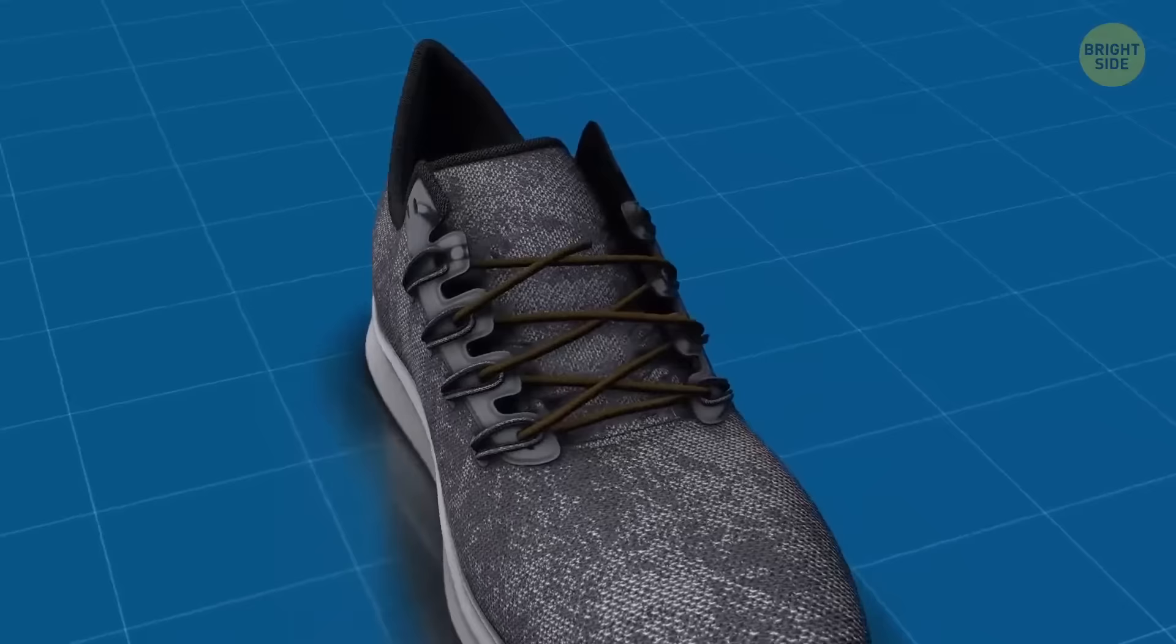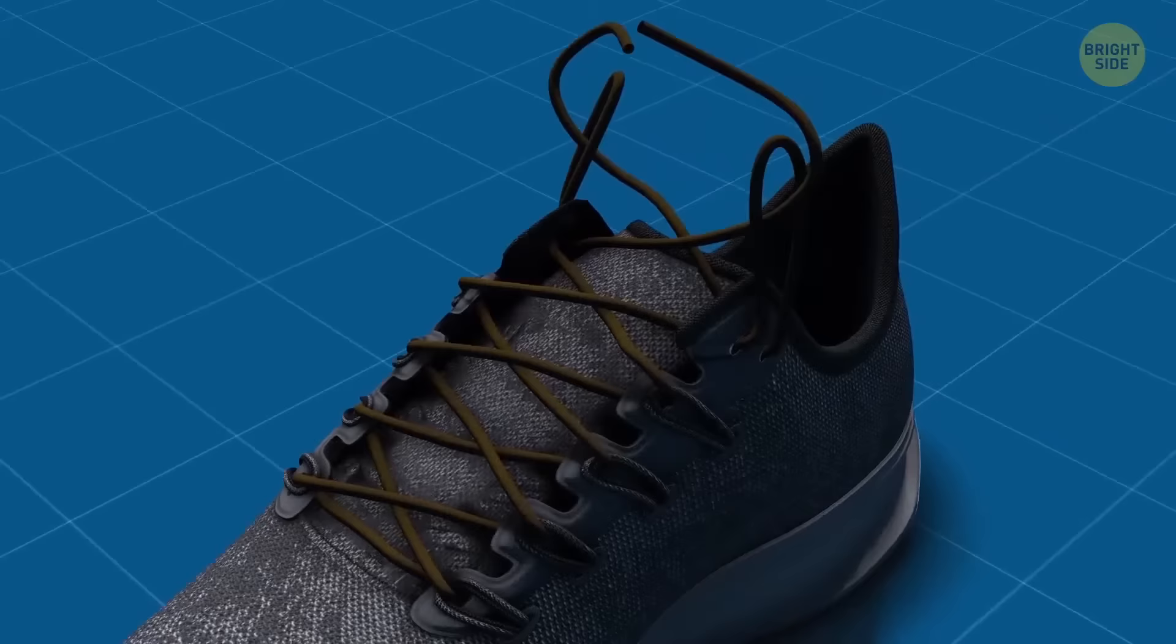All running shoes have an anti-blister system pre-installed. It's the extra hole on top of your sneakers. Make a loop with this hole inserting the lace in backwards. Cross the laces and insert them into the loops. Then pull the laces down, creating a kind of lock. Some people like to hide the laces under the soles to make them totally invisible.